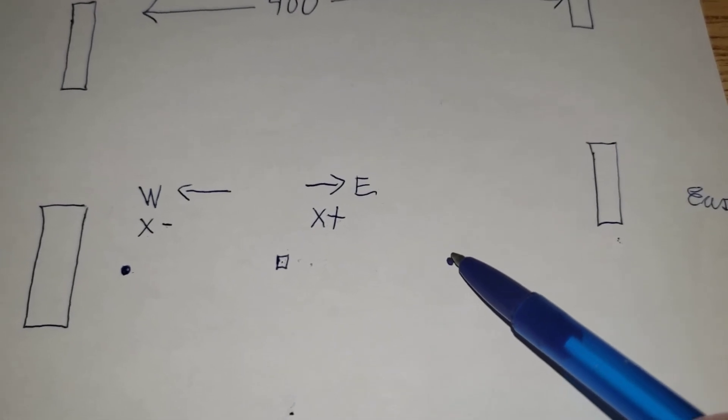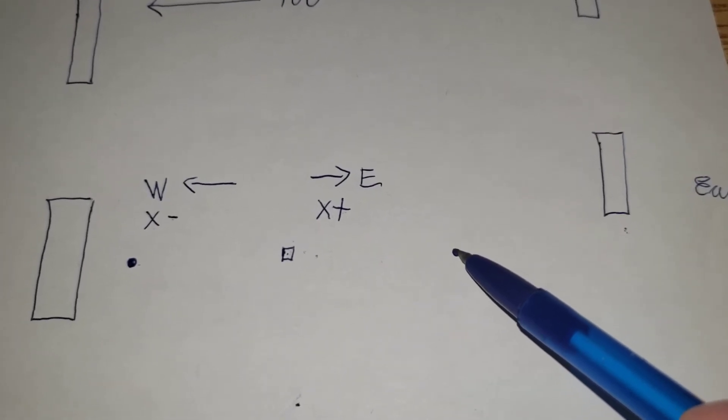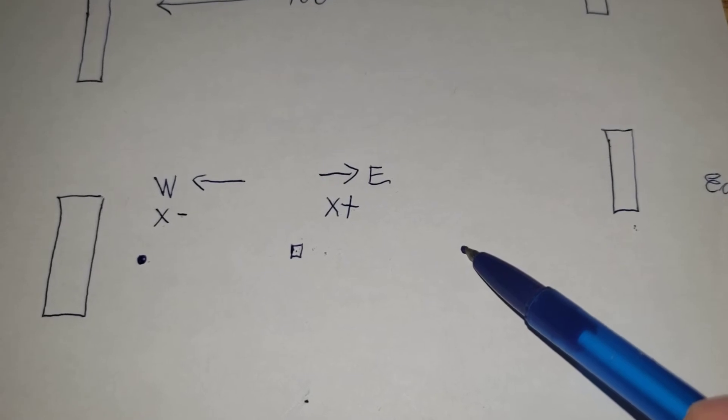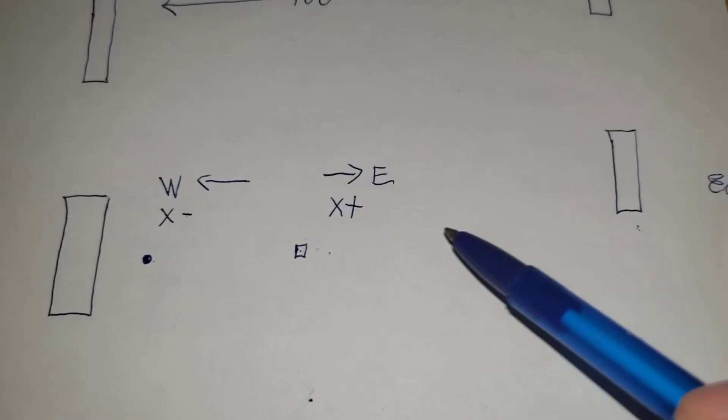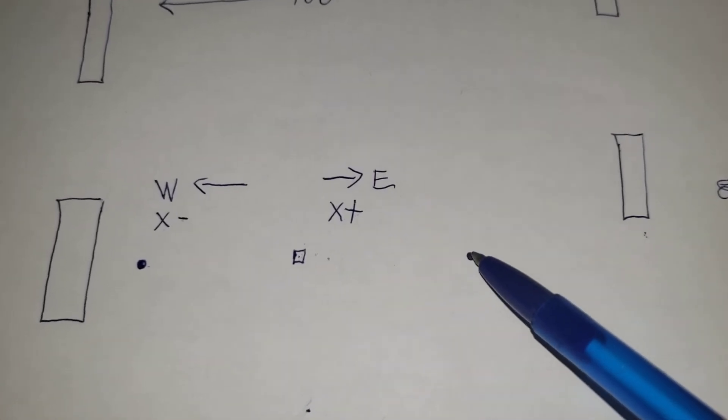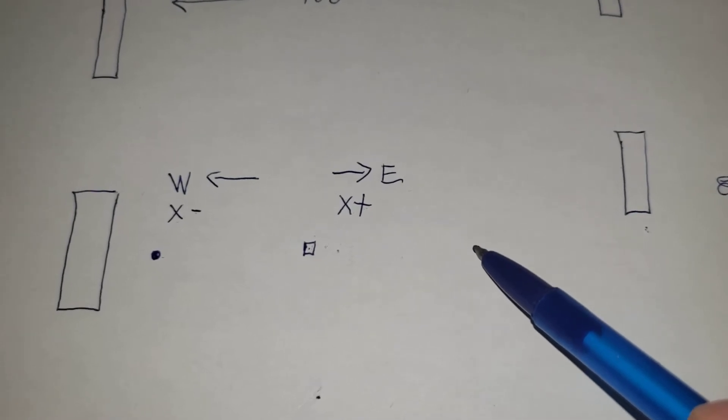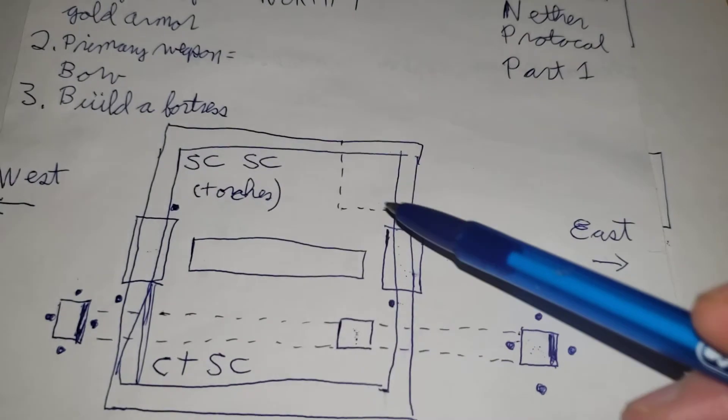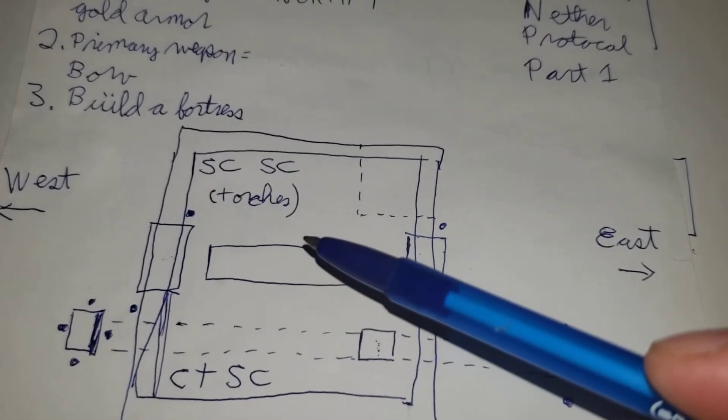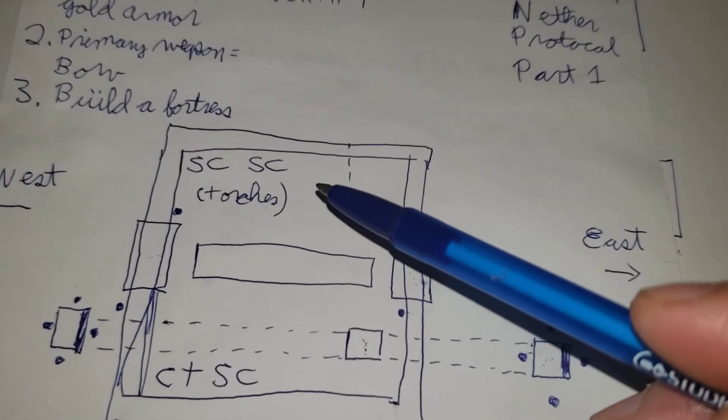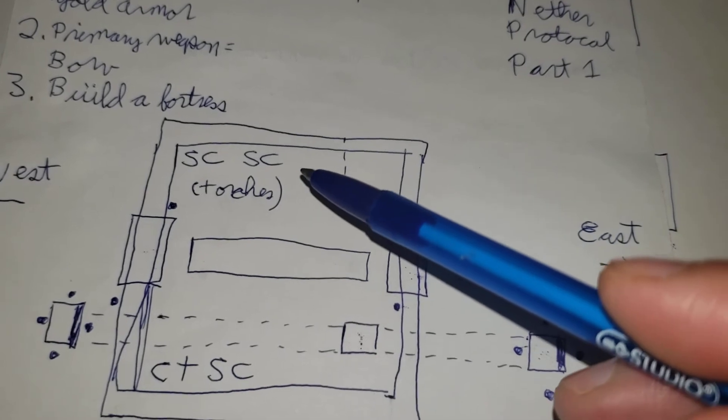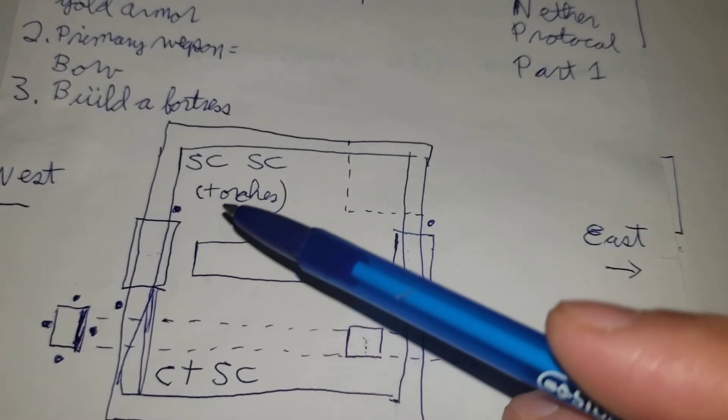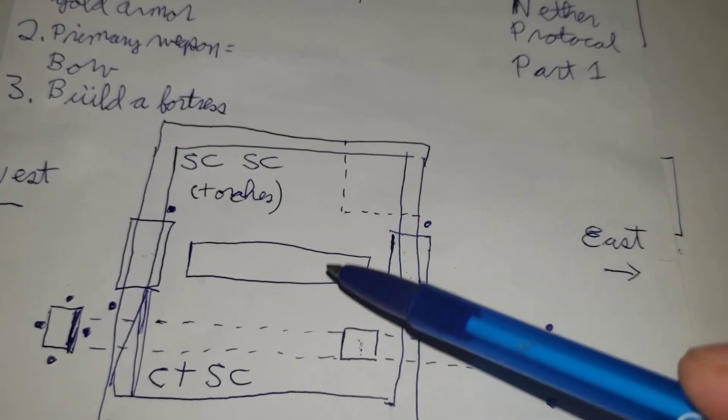And after traversing about 150 tiles from your fortress, you're going to make another fortress. But this time it's going to be a small one, a very small one, just enough to fit you inside. Let's say the inside room is three tiles by three tiles.